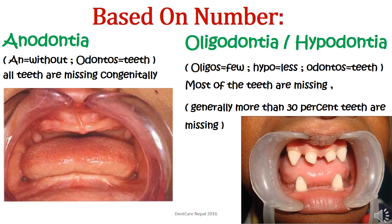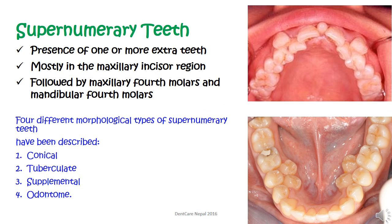Let's start with the developmental defects based on number. Anodontia — the root word 'an' means without, so in anodontia all teeth are missing completely, as we can see in the first figure. Similarly, oligos means few, so hypodontia means less — similar to how hypotension means reduced blood pressure. In hypodontia, most of the teeth are missing; generally more than 30 percent of teeth are missing, as we can see in the second picture.